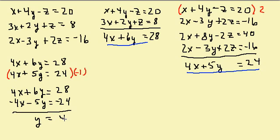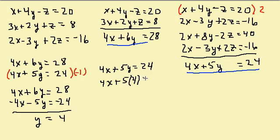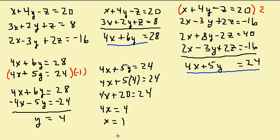I add them so the x's go out and I'm left with y equals 4. Now I take this and plug it into one of these. I'll plug it into 4x plus 5y equals 24: I get 4x plus 5 times 4 equals 24, so 4x plus 20 equals 24. Subtract 20 from both sides: 4x equals 4, divide both sides by 4, I get x equals 1.